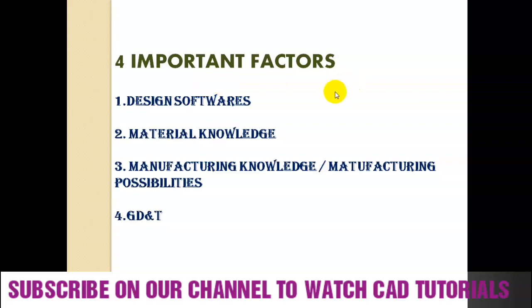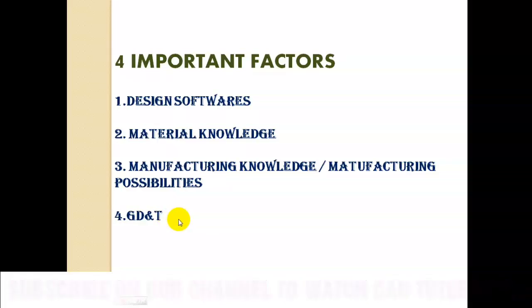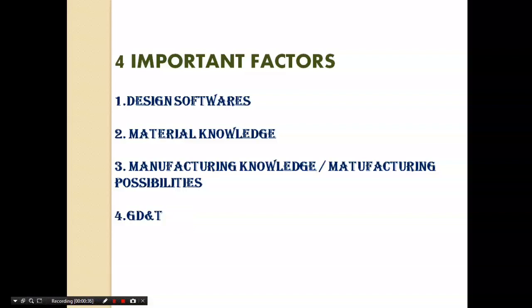The first one is design softwares. The second one is material knowledge. The third one is manufacturing knowledge, or manufacturing possibilities. The fourth one is GD&T — GD&T is nothing but geometrical dimensions and tolerance. We are going to discuss each one in detail.